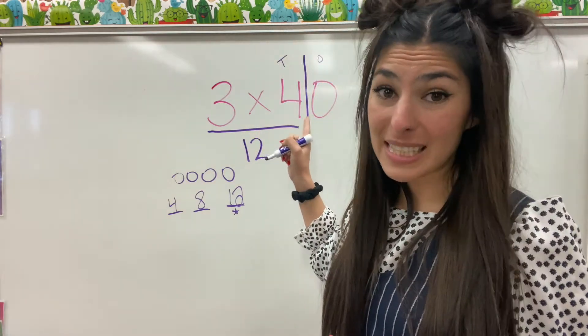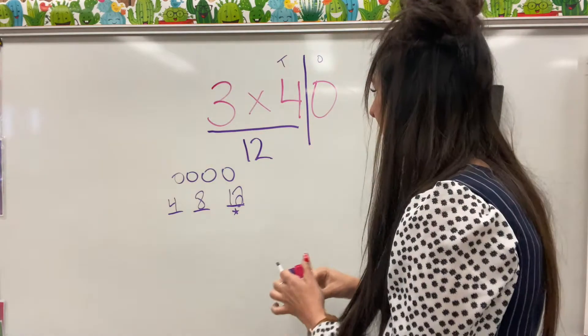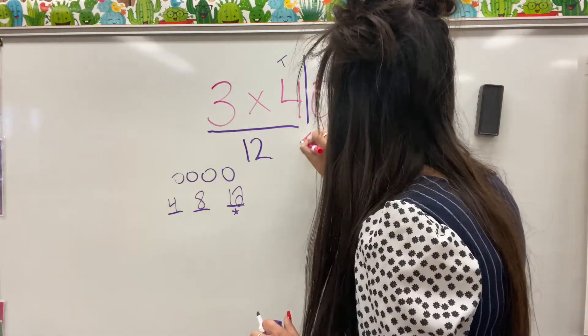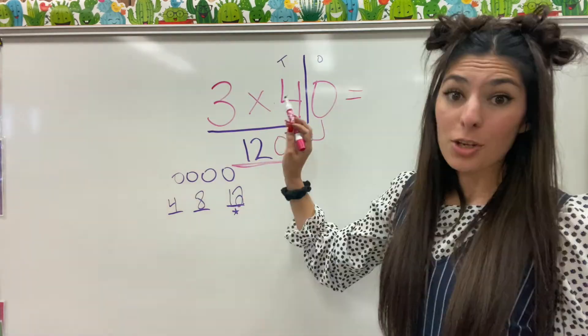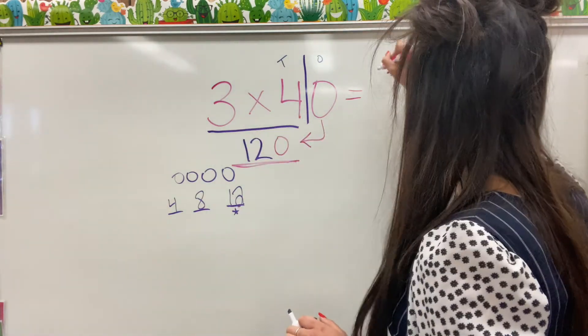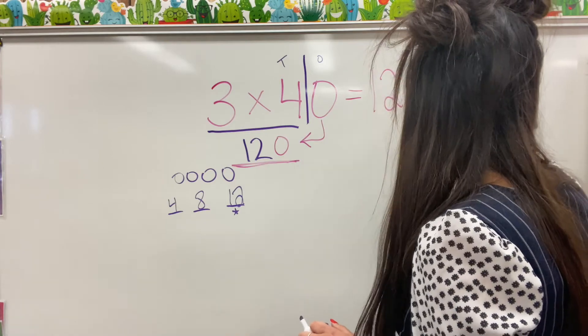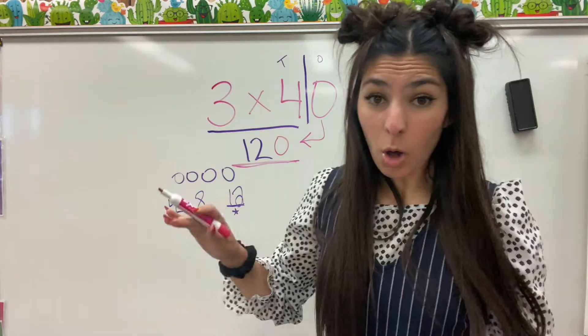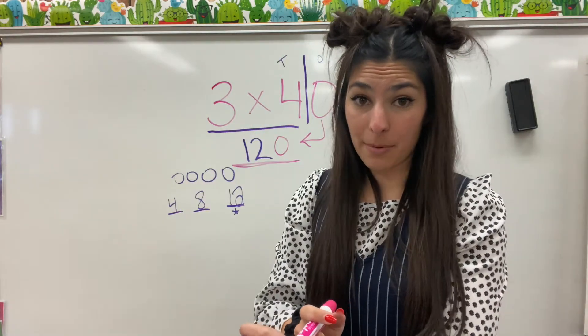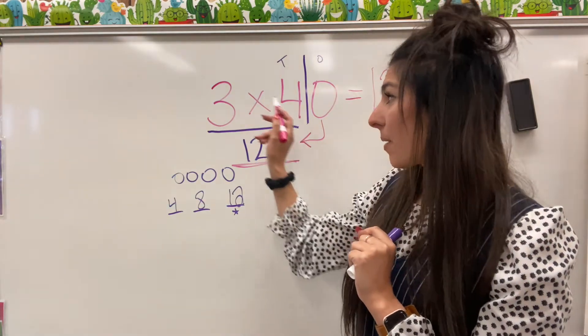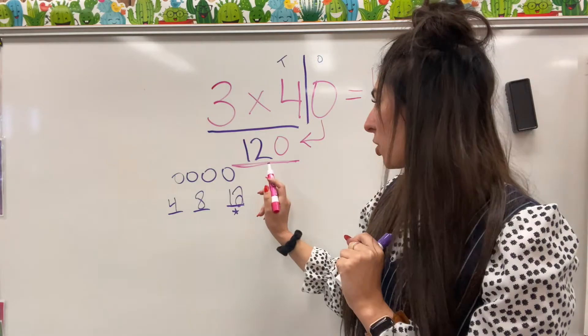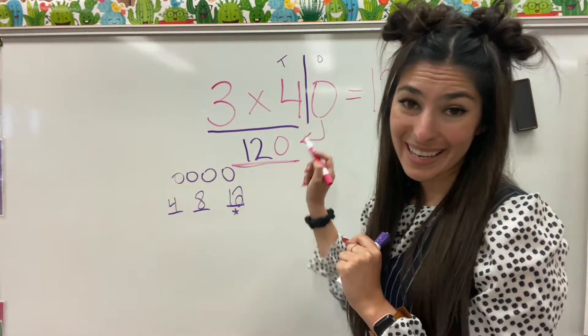Now we can't forget about that 0 that we set aside. So we can actually take this 0 and move it right here and 120 is our actual answer. So 3 times 40 equals 120. So all we did was chop that big number in half and use the tens and we multiply that tens number by the smaller number to get 12 and then we added in our 0 again.